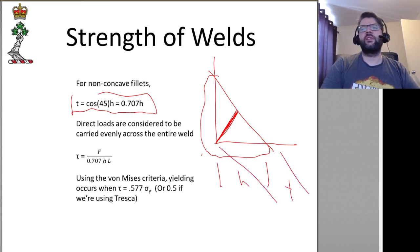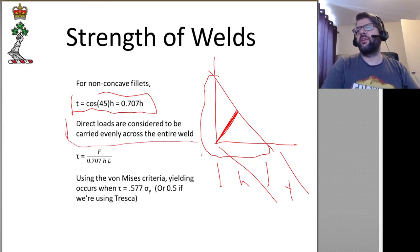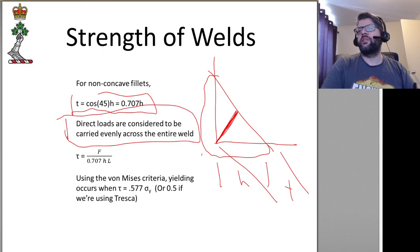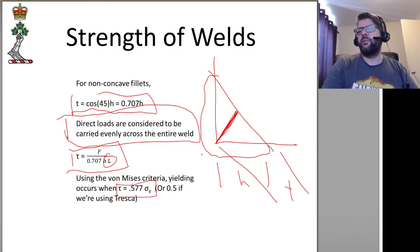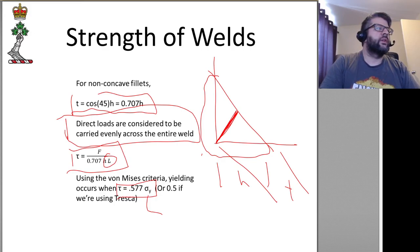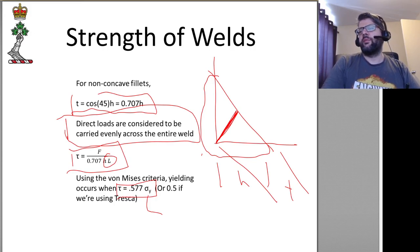We obviously can't measure that throat thickness t directly. For direct loads, we're basically assuming that they're carried evenly across the entire weld. So our shear stress there is the force divided by t times the effective length. If we're talking about yielding, the von Mises criterion is going to be based upon 0.577 of the yield strength of the weld metal — so the electrode yields — 0.5 if we're using Tresca.